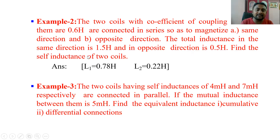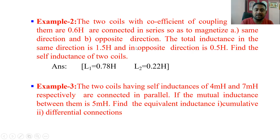We need to find the self inductances of the two coils. In the given data we have series aiding and series opposing equivalent inductances and the K value. As we know, K = M / √(L1·L2), and we know both the K value and the M value, so we can easily find out the L1 and L2 values for this problem.